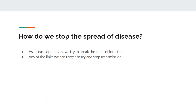So how do we stop the spread of disease? We have to break one of the chains. If you break a chain link in the cycle, the cycle breaks, the flow of disease stops. That's the job of epidemiologists — to find out how to break those chain links and then enact steps to break them.